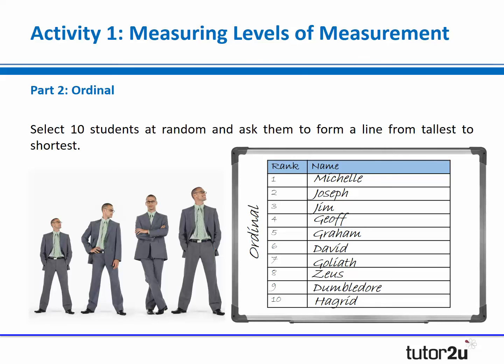What you'll hopefully get them to start discussing is that we don't know the differences between people's heights. With my names on the board, we don't know how much taller Hagrid is than Dumbledore, for example, because we've got no measurements involved. And that beautifully then leads you on to the third and final part of the activity. With a big class, I'd probably only do it with 10 at this stage. You say: let's take your actual height - and this is where you'll need your tape measure.